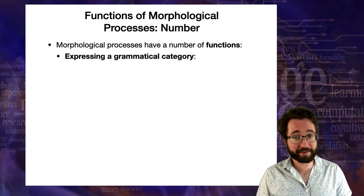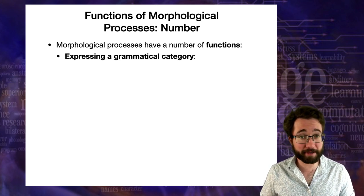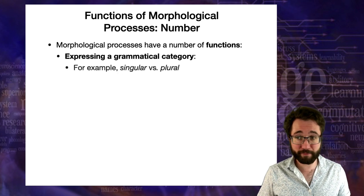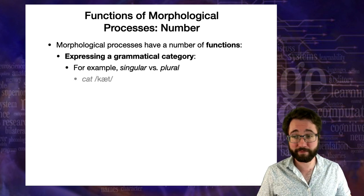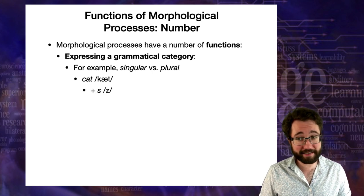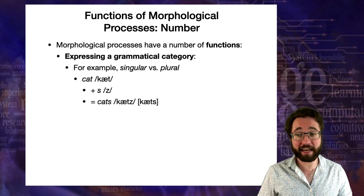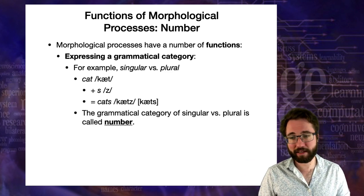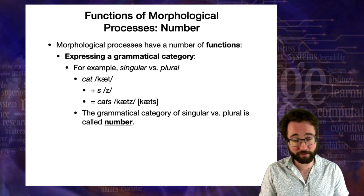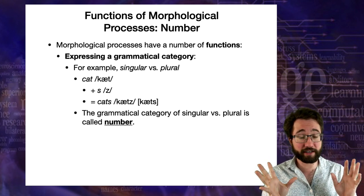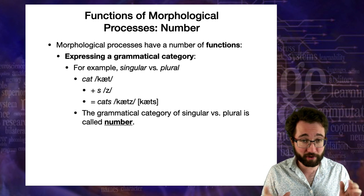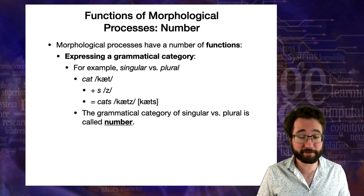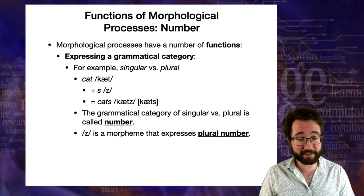Another major function of morphological processes is expressing grammatical categories. For example, this includes singular versus plural nouns. In English, we have singular nouns like 'cat'; we add the suffix 'S' — which is phonemically an underlying Z — and we end up with 'cats'. This is the grammatical category of number. The number of a noun is expressed by the presence or absence of this suffix. Z is a morpheme that expresses plural number.